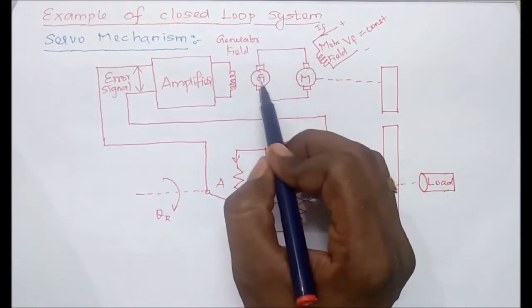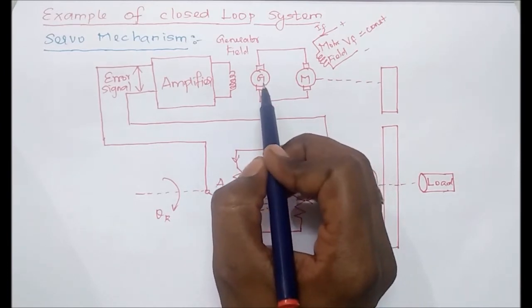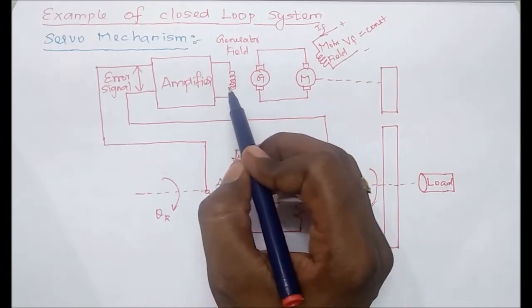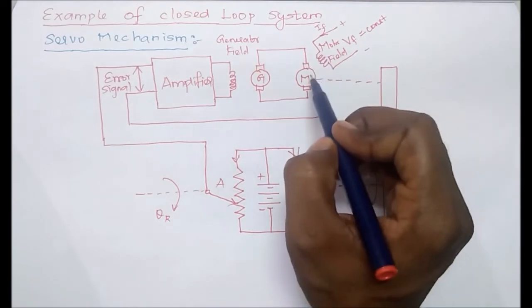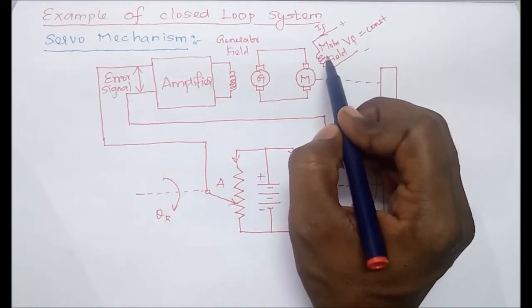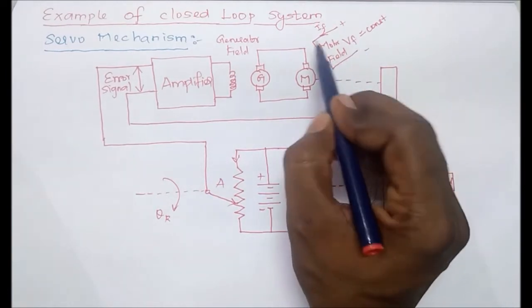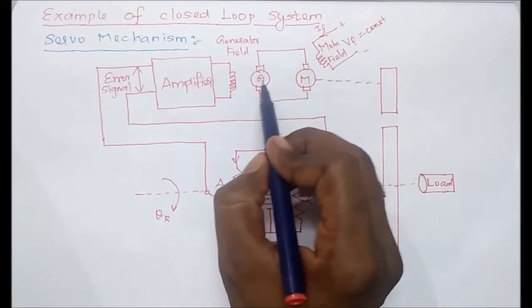The motor is supplied by a generator. The generator's field will be controlled through the system. The field winding of this motor is kept constant, meaning the supply to the motor field is constant.